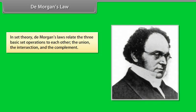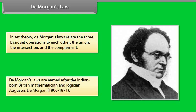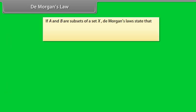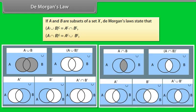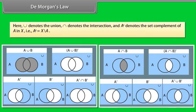De Morgan's Law. In set theory, De Morgan's Laws relate the three basic set operations to each other — the union, the intersection, and the complement. De Morgan's Laws are named after the Indian-born British mathematician and logician, Augustus De Morgan. If A and B are subsets of a set X, De Morgan's Law states that the complement of (A union B) is equal to the complement of A intersection the complement of B. Here, this denotes the union, this denotes the intersection, and this denotes the set complement of A in X.